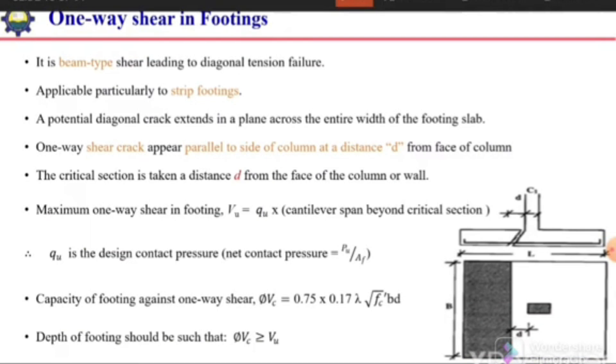One-way shear in footing is a beam-type shear leading to diagonal tension failure. Just like in beams, we have diagonal tension failure in slabs. This is applicable particularly to strip footings or footings below load-bearing walls.